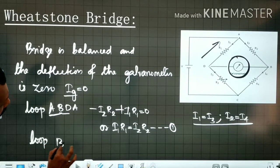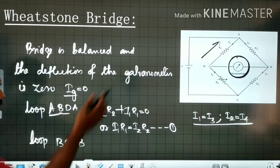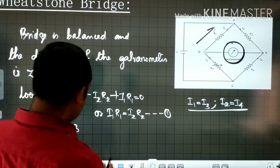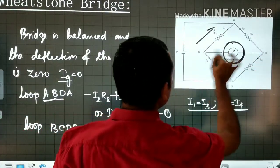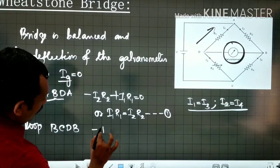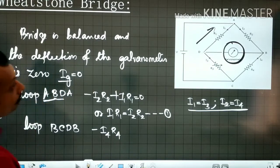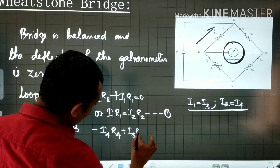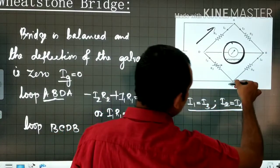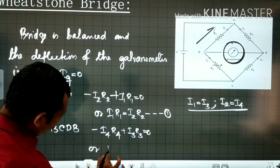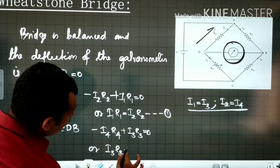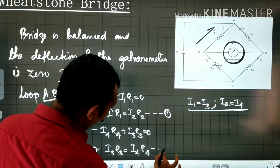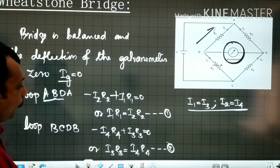Taking the loop BCDB. Minus I4 R4, because dot and dot are in the same direction, plus I3 R3 is equal to zero, because here it is in the opposite direction. Or I3 R3 is equal to I4 R4. That is equation number two.